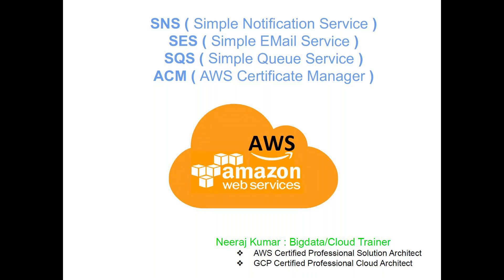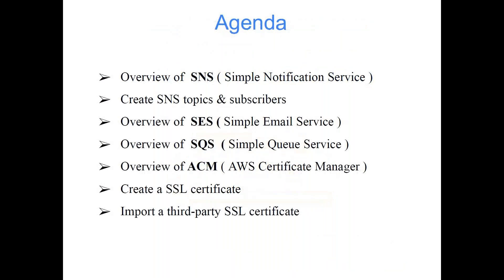These services do not have much significance independently, but when working with other services they make sense. For example, if your server is not running and you want to send a notification, SNS can be used — it sends a simple text message. SES, on the other hand, is a rich-feature email service where you can attach HTML or add file attachments.